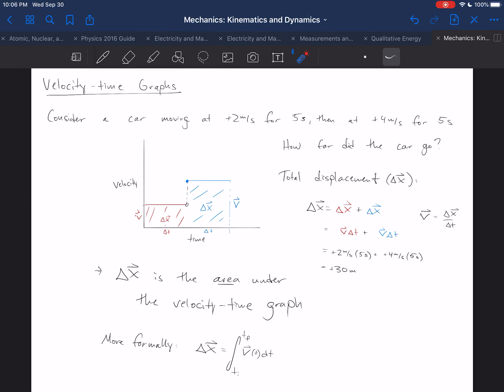So consider some constant velocity motion and consider analyzing that constant velocity motion using a velocity-time graph. Consider a car moving at, for example, positive 2 meters per second for 5 seconds, and then at positive 4 meters per second for 5 seconds.